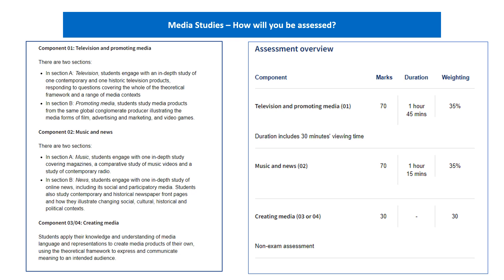Paper 1 is called Television and Promoting Media. In Section A you'll be looking at two television programmes. The first is a police drama from 2021 called Vigil. The second is called The Avengers — not to be confused with the Marvel Avengers — it's a classic spy drama from the 1960s. Section B is Promoting Media, where you'll look at the Lego Movie and the game and advertising that went alongside it. That exam is one hour and 45 minutes and is worth 35% of your overall GCSE mark.